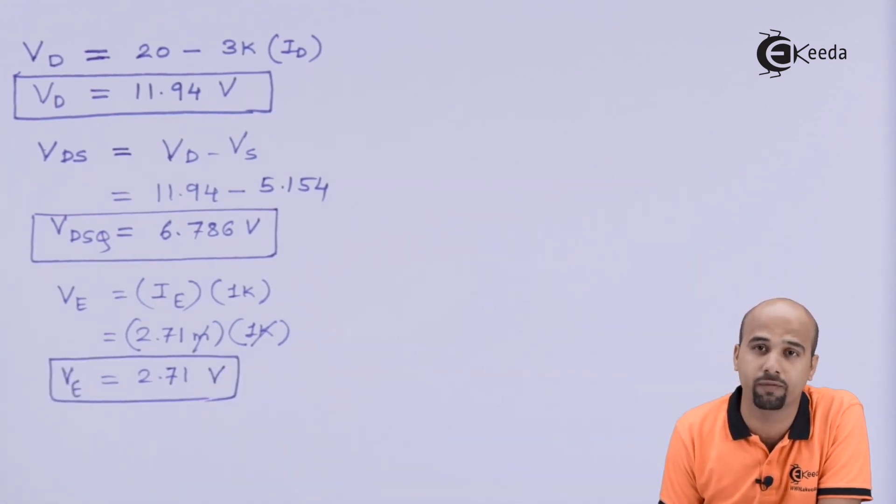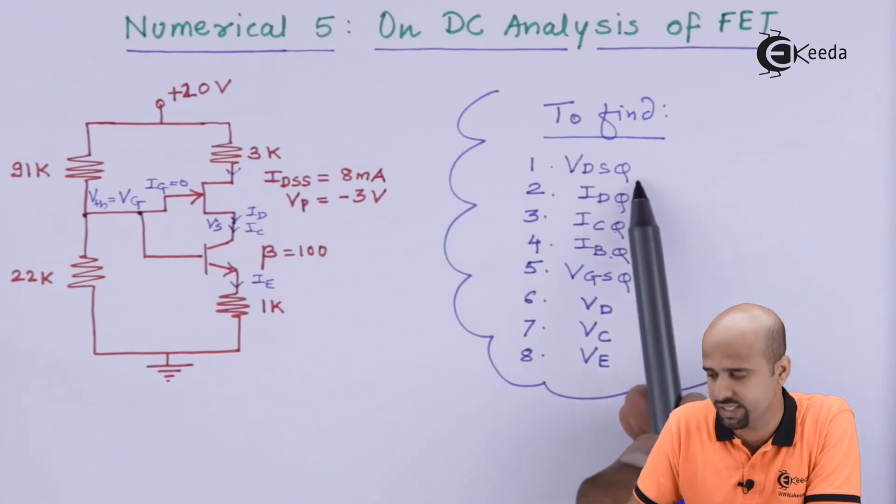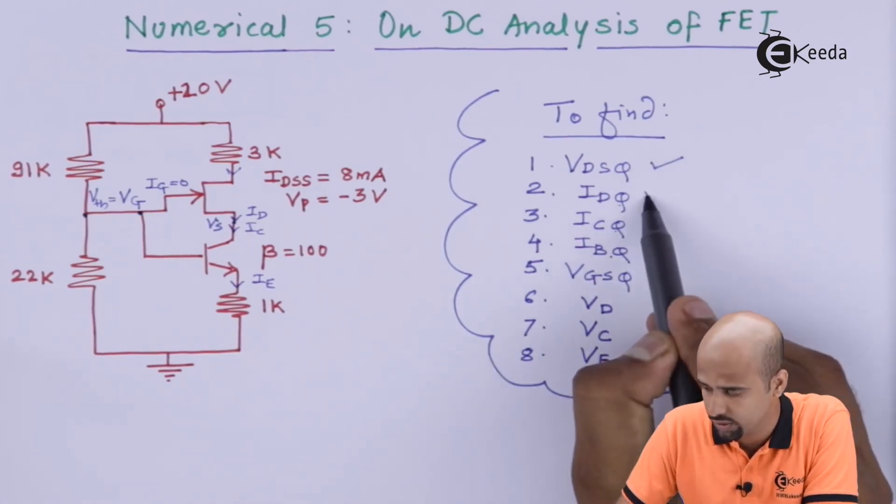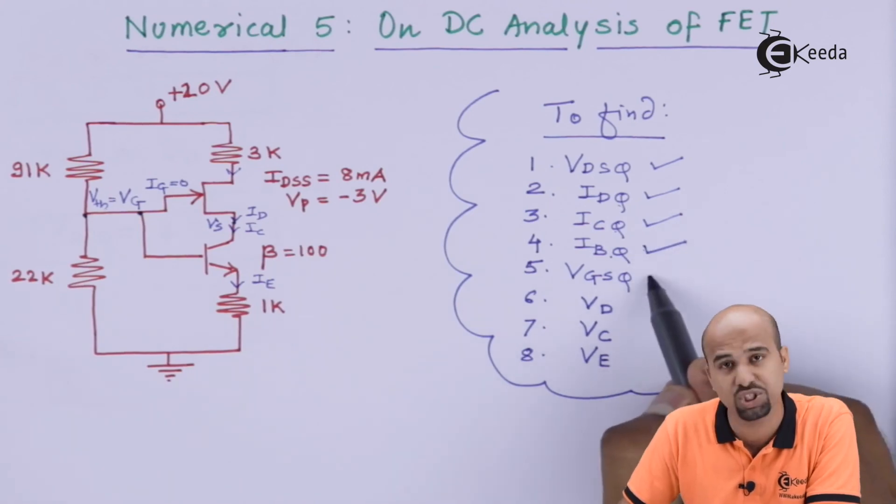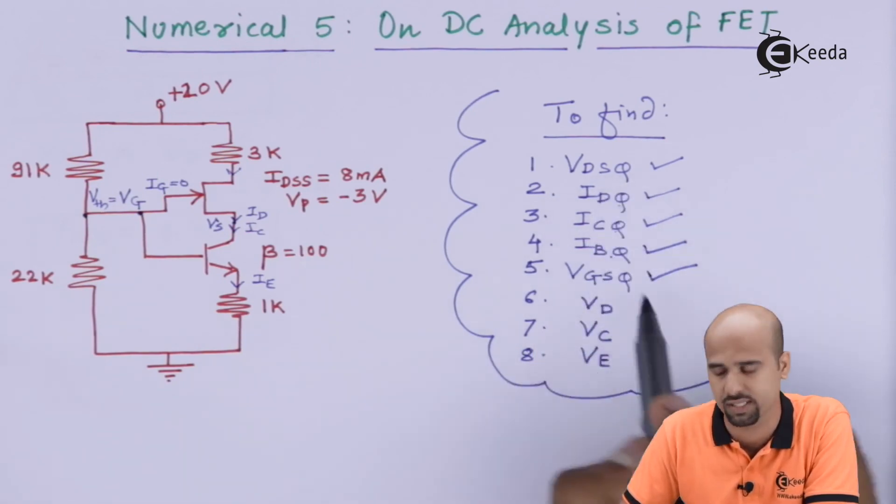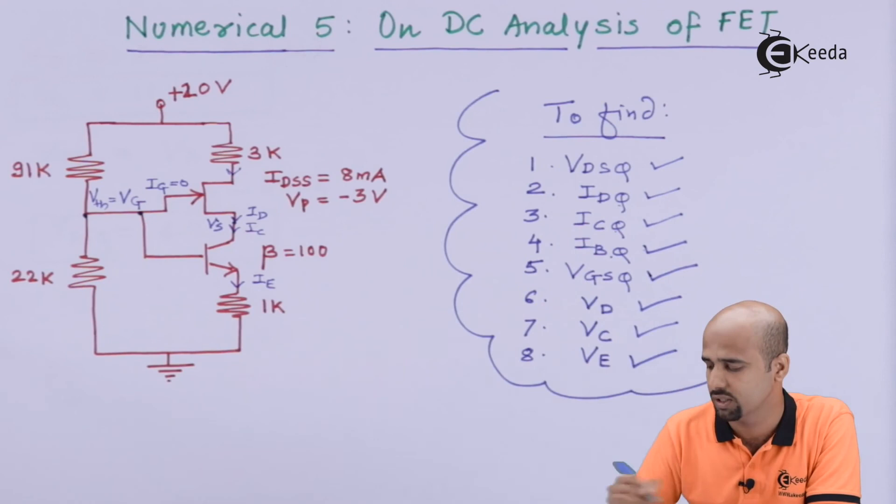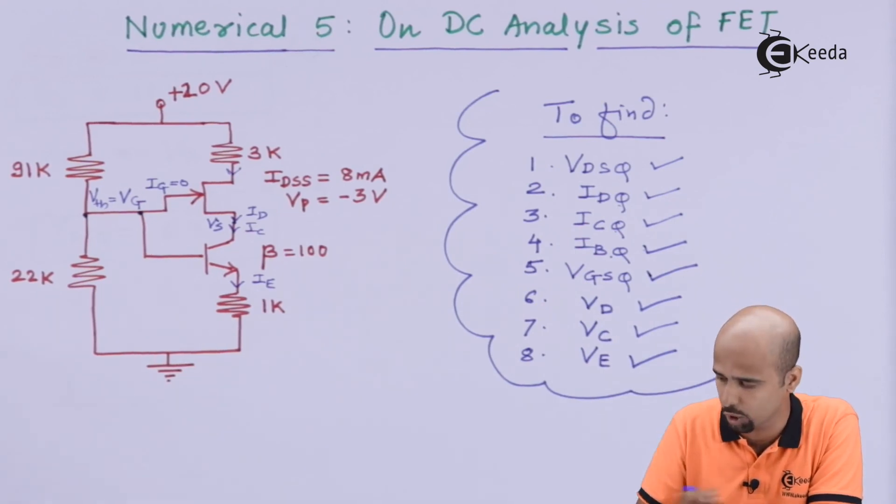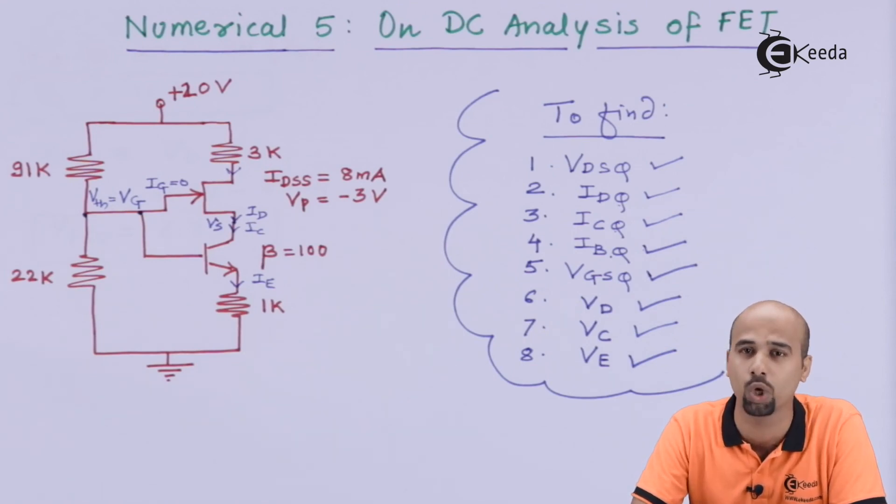Let's come to the question part again whether we have missed 1 or 2 findings or not. The value of Vds, the value of Vds Q, yes we have got it. Value of Id Q, yes we have done. Ic Q is same as Id Q. Ib Q, that was the first step. Vgs Q, yes by Shockley's equation we have found out. Vd, before Vds Q, we have found out the value of Vd. Vc, yes that is nothing but the value of Vs and Ve that was the last finding that was remaining. So, we have done all the findings and we will get almost 15 to 10 marks within 15 minutes of time. Thank you so much for watching this particular video. I hope you have enjoyed a lot. For more and more numericals and conceptual videos, we have to subscribe Ekeda channel. Thank you so much.